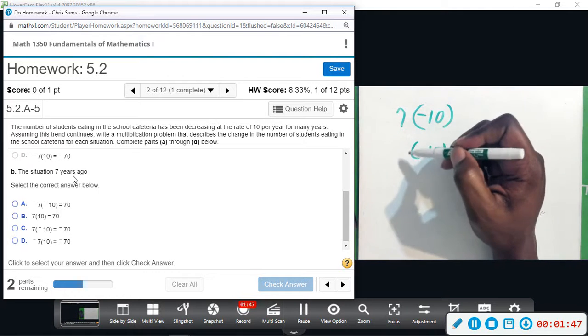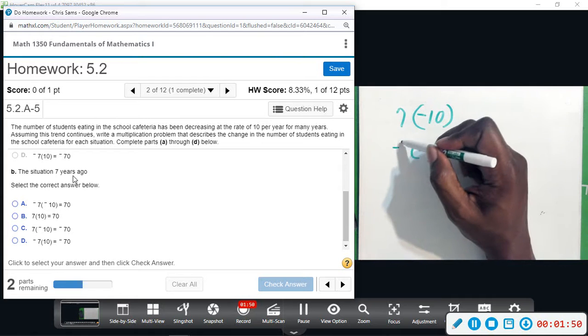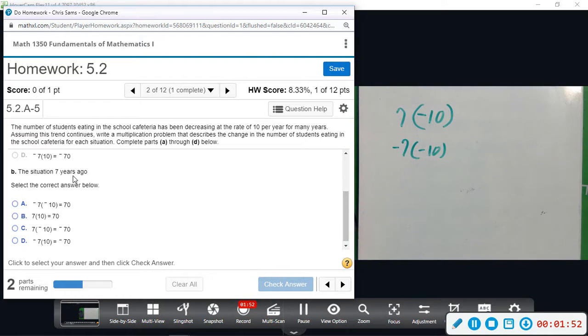So we would actually be adding, so what we need to do is seven years ago would be another negative would represent that. That would be represented by A. Seven years ago, so that's negative seven.